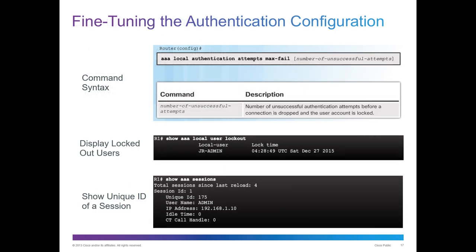For fine-tuning authentication, we can do: AAA login authentication attempts max-fails. You can set the number of unsuccessful attempts before the connection is dropped and the user account is locked. To check locked accounts, you can do show AAA local user lockout, which shows the user and locked time. To see the unique ID for a session, you can do show AAA sessions. Get familiar with the show AAA subcommands for troubleshooting.